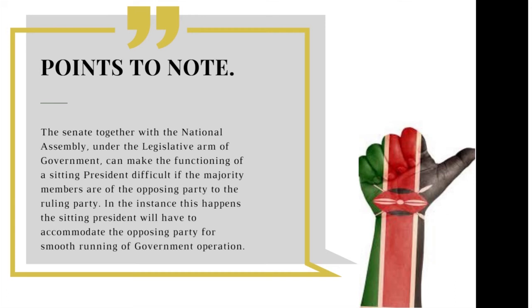The Senate, together with the National Assembly under the legislative arm of government, can make the functioning of a sitting president difficult if the majority members are of the opposing party to the ruling party. In such an instance, the president will need to accommodate the opposing party for smooth running of government operations. This was seen around 2007-2008 when Honorable Mwai Kibaki won but did not have the majority numbers in both the Senate and the National Assembly, so he had to accommodate the opposing party through a power-sharing arrangement.